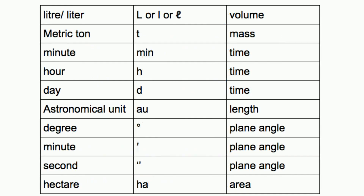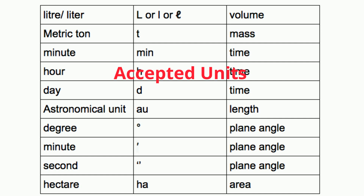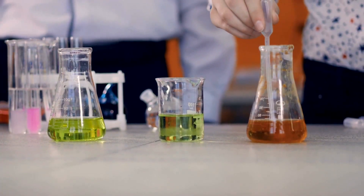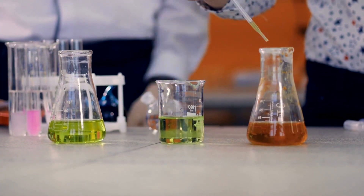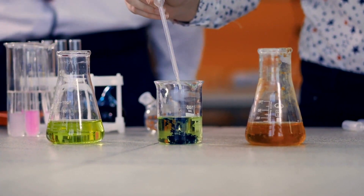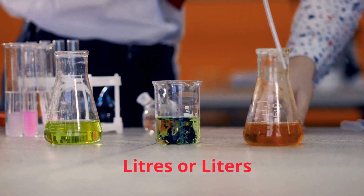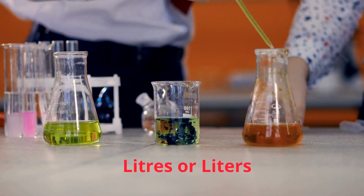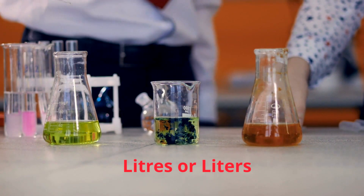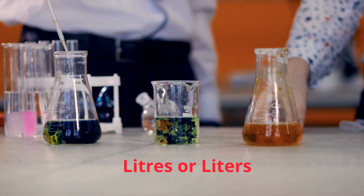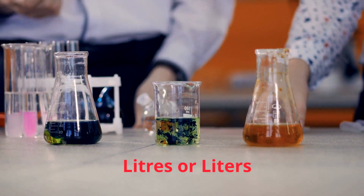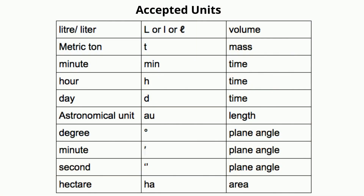Finally, we have accepted units. For example, in almost any high school science lab, you will measure volume using liters. Liters is an accepted unit that can be used with the SI units. In other words, it is accepted in most papers and journals, but it is not a base unit of the SI. Here is a list of some accepted units.